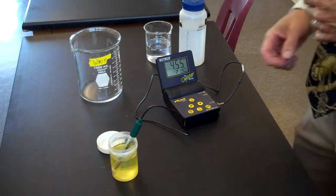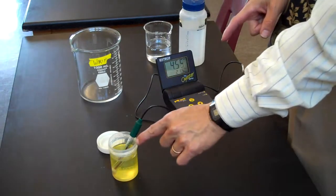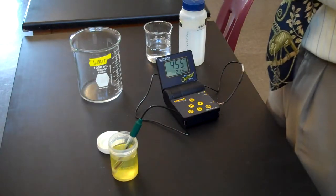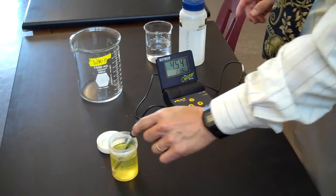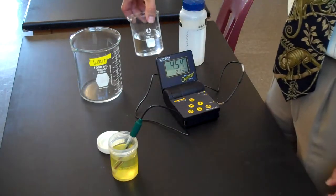When you go to use the pH meter it will probably look like this. The electrode is resting in a buffer of pH 4 and the solution you'll bring is in a beaker like so.